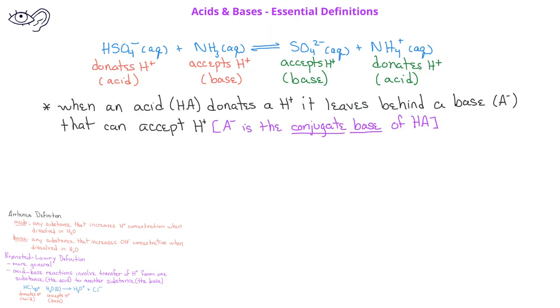When any acid, HA, donates a proton, it leaves behind a base, A-, that can accept a hydrogen ion, or act as a base. In this case, the HSO4- on the reactant side acts as an acid, and when it loses a hydrogen ion, it leaves behind the base, SO42-.